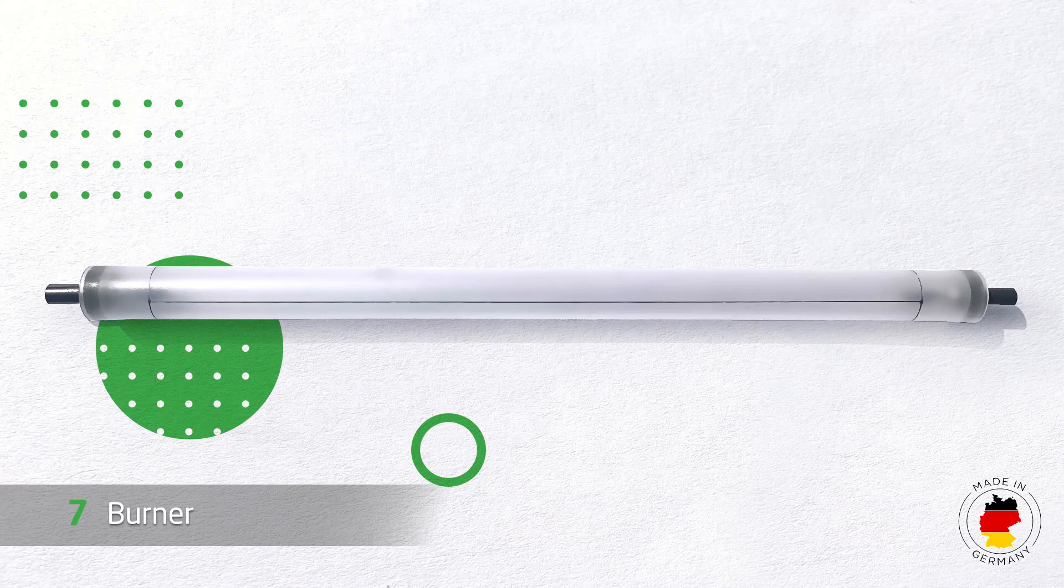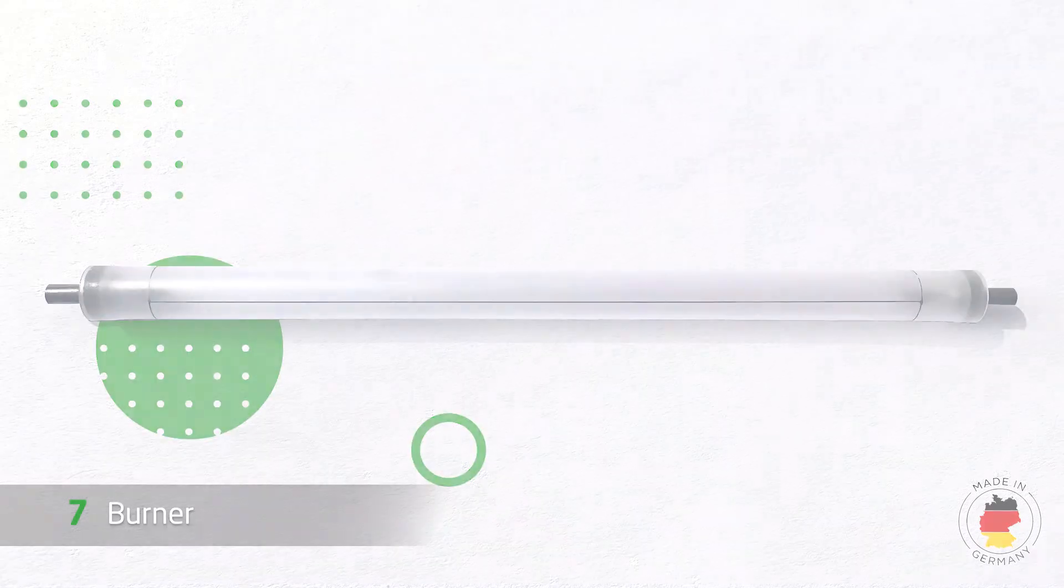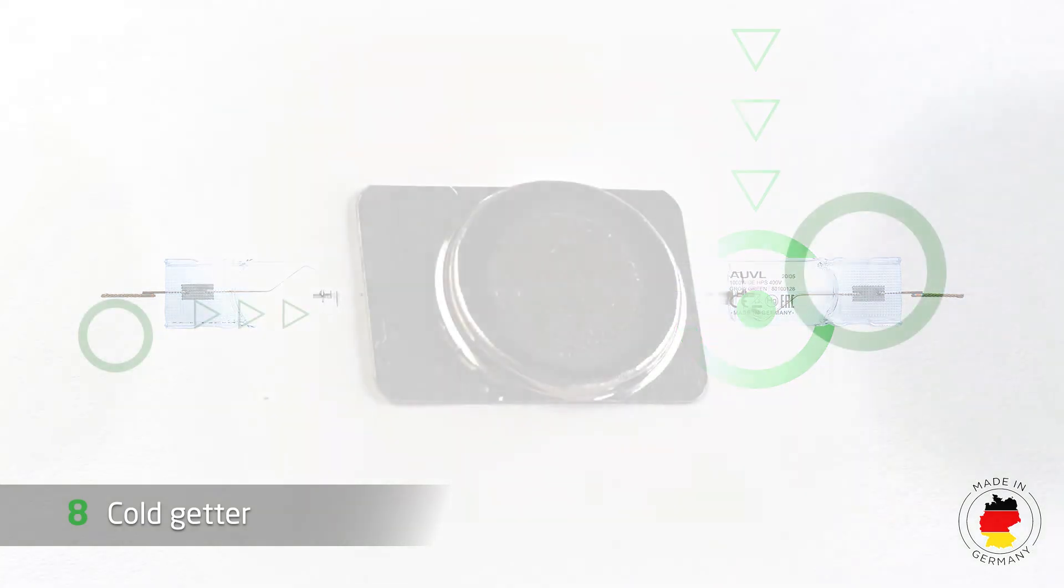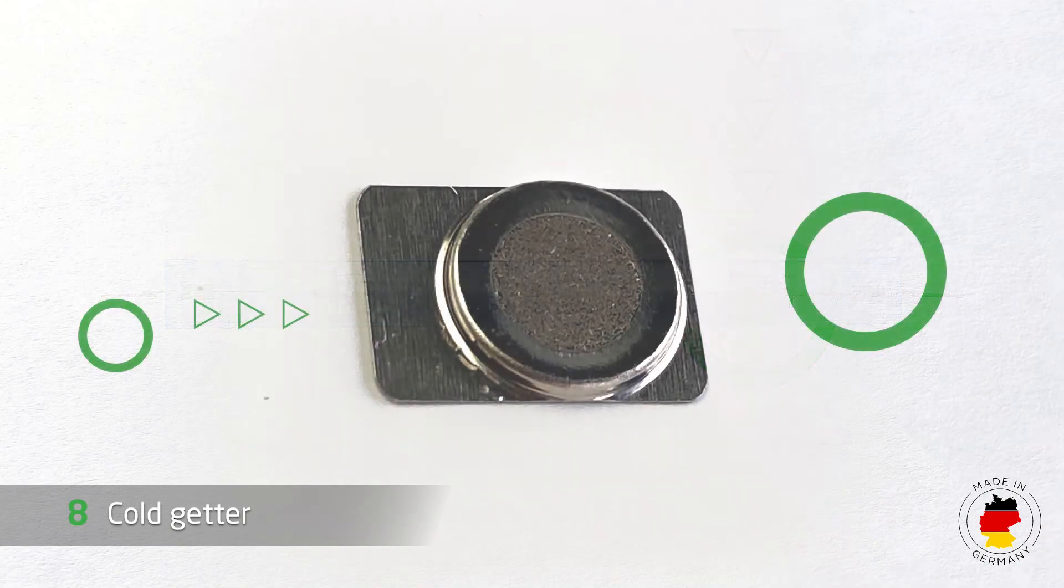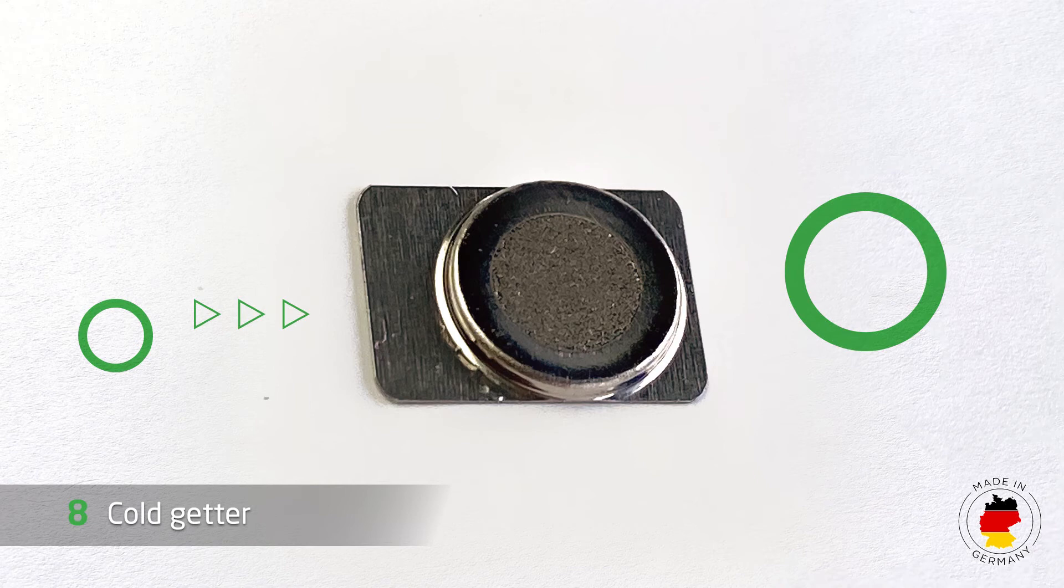And here we have the cold getter. This tiny small component is, let's put it this way, a permanently employed cleaner for the lamp. Through chemical reaction, it binds undesirable residues of gases and hydrogen which could still be in the lamp, resulting in a reduction of particles.